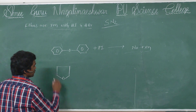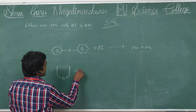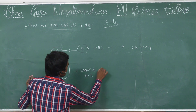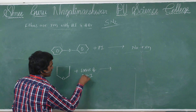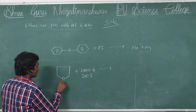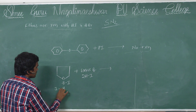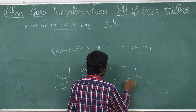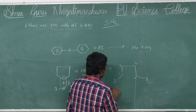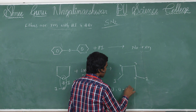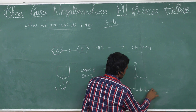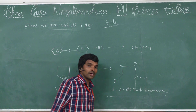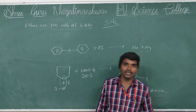This is tetrahydrofuran reacting with excess HI — that is 2 moles of HI. Here water is eliminated and the product formed is 1,4-diiodobutane. These are the very very important reactions of ethers.